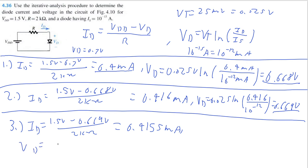Then VD is equal to 0.025 volts times the natural log of 0.4155 milliamps divided by 10 to the negative 12 milliamps. And that gets us 0.668 volts.